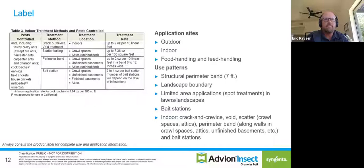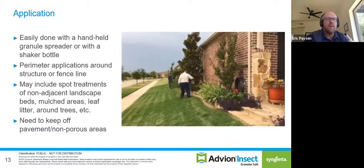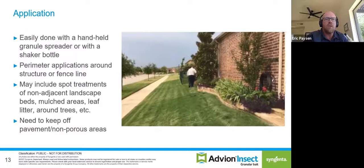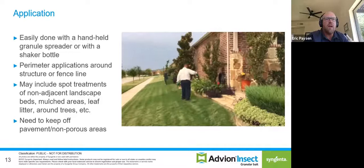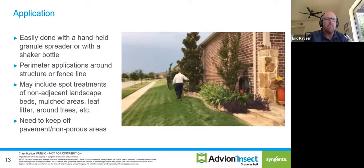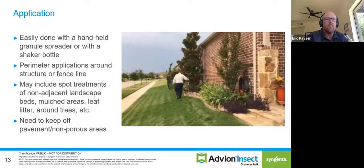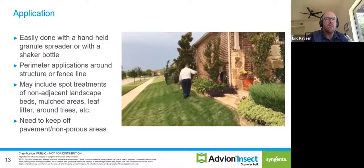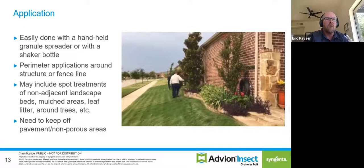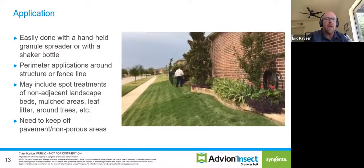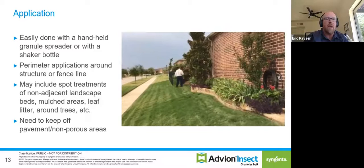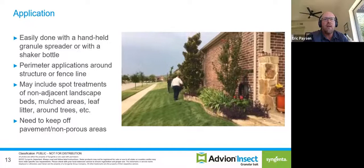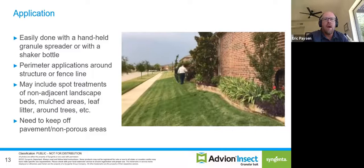Application is easily done with a handheld granule spreader, and I would strongly recommend checking out some of these new battery-operated spreaders. They're super efficient and can give your technicians a break from some of the hard manual labor this job usually entails — it's literally just as easy as walking around the property while making that application. You can also apply perimeter applications around the structure or fence line, with spot treatments always an option. Areas you'd really want to hit would be landscape beds, areas with mulch or river rock leaf litter around trees. One restriction: keep the product off of pavement and non-porous areas.